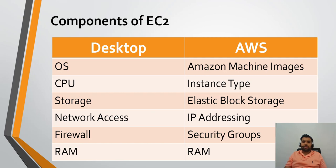For storage, a desktop uses a hard drive; AWS uses Elastic Block Storage — we'll discuss that in later sessions. In a desktop you have a network access card; in AWS there is IP addressing, some of which we saw when we reviewed subnets and route tables. In a desktop you have a firewall to prevent unauthorized traffic; in AWS we have security groups. As a security tester or auditor, reviewing security groups and how they are set up is very important — we'll definitely take a deep dive into those.